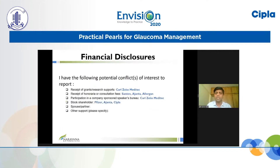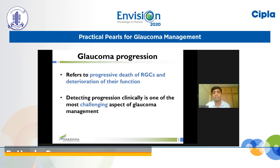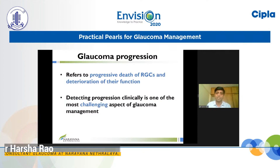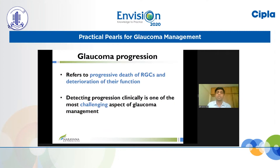These are my financial disclosures — nothing particular of interest to today's discussion. We all know that glaucoma progression refers to progressive death of retinal ganglion cells, and we detect this clinically using a lot of surrogate markers. Detecting progression clinically is one of the most challenging aspects of glaucoma management.